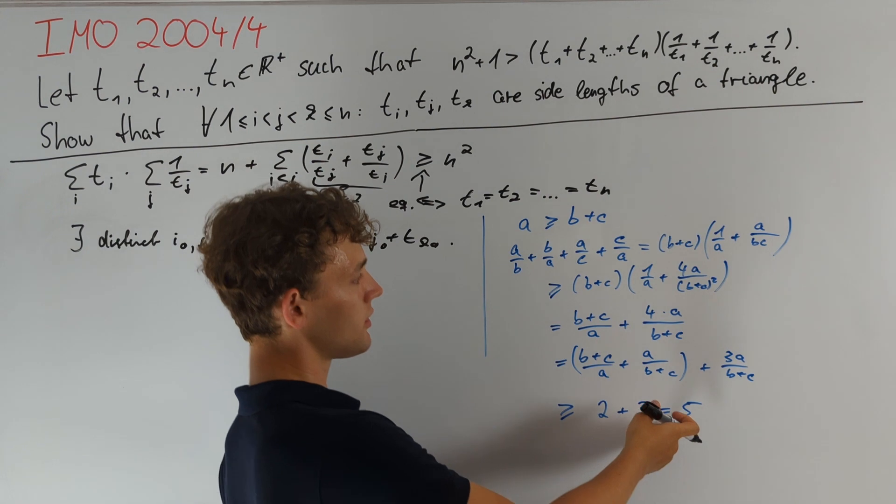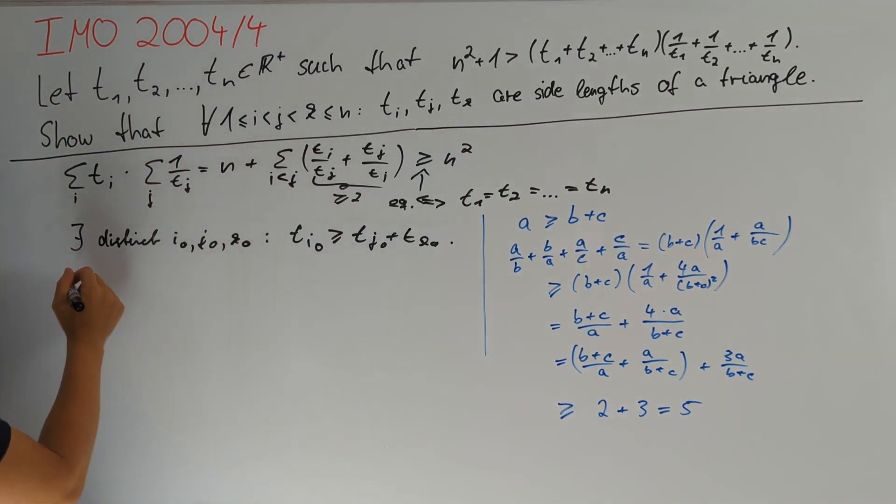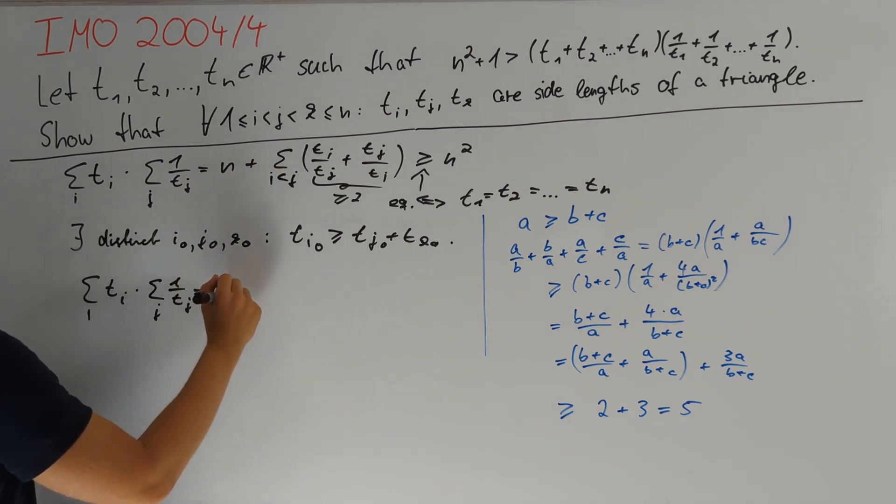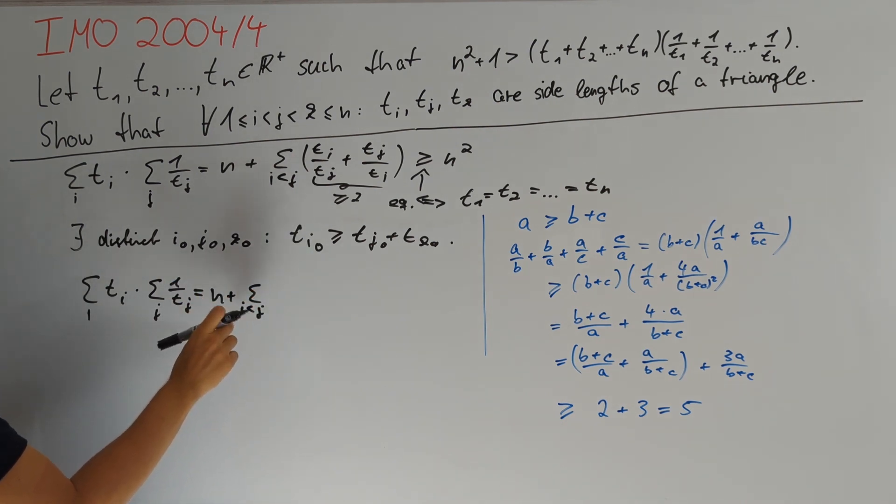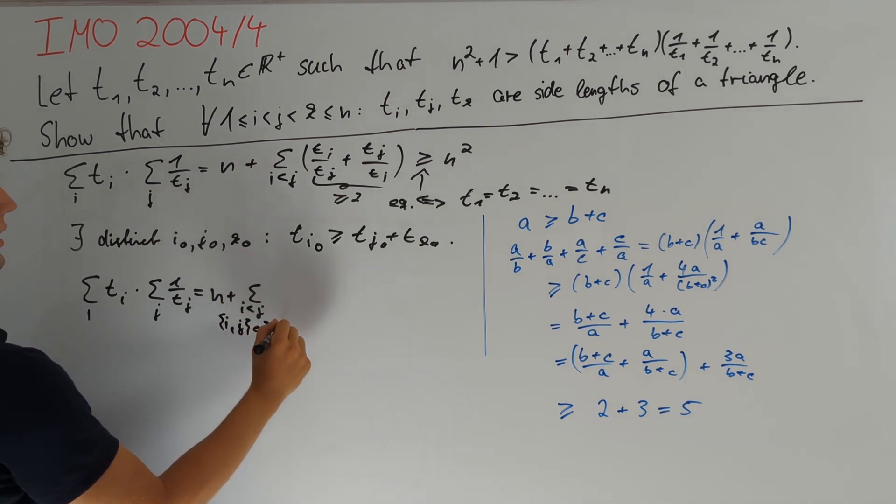Therefore, this should be enough to increase our lower bound by at least 1. Let's again bound the sum over all i of tᵢ times the sum over all j of 1/tⱼ. We first express this in a similar way as before: this equals n plus the sum over indices i < j, but now we exclude those where i and j are equal to i₀, j₀, or they are equal to i₀, k₀.